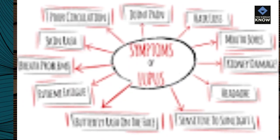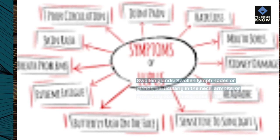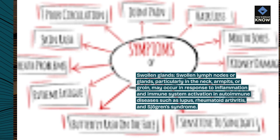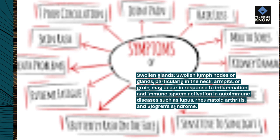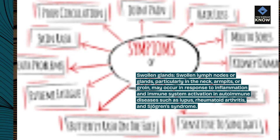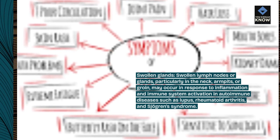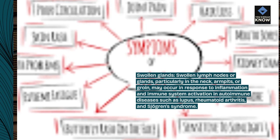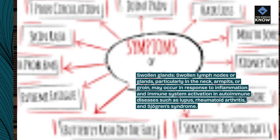Swollen glands: swollen lymph nodes or glands, particularly in the neck, armpits, or groin, may occur in response to inflammation and immune system activation in autoimmune diseases such as lupus, rheumatoid arthritis, and Sjogren's syndrome.